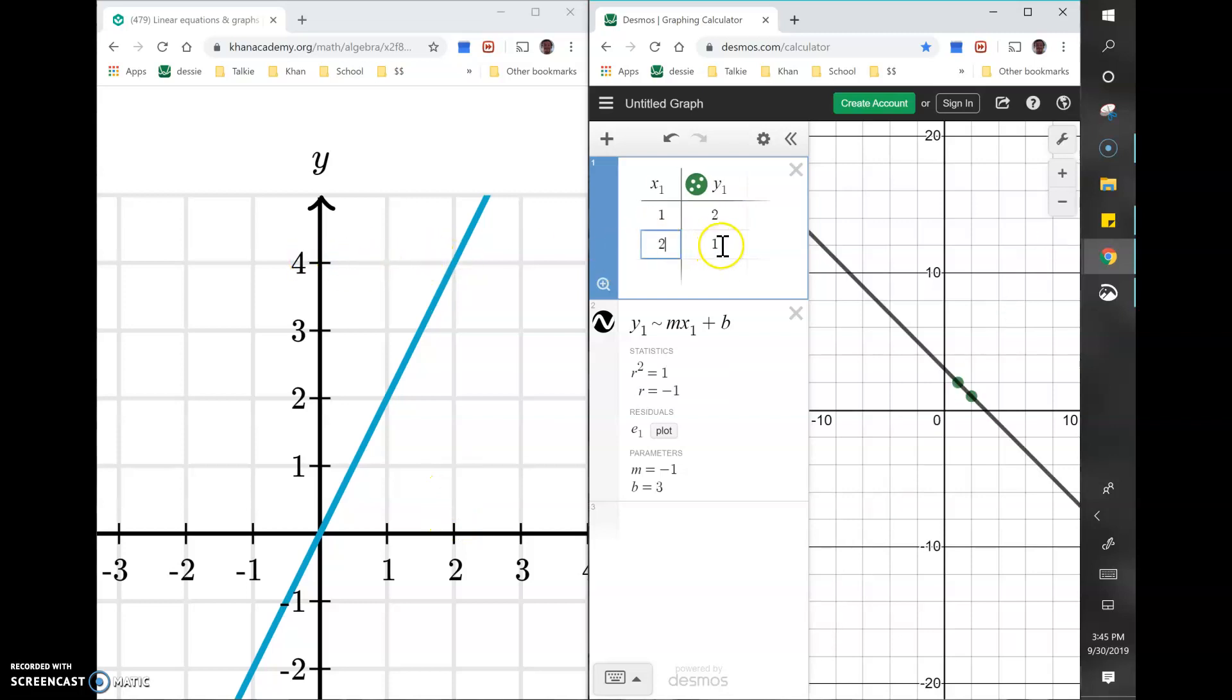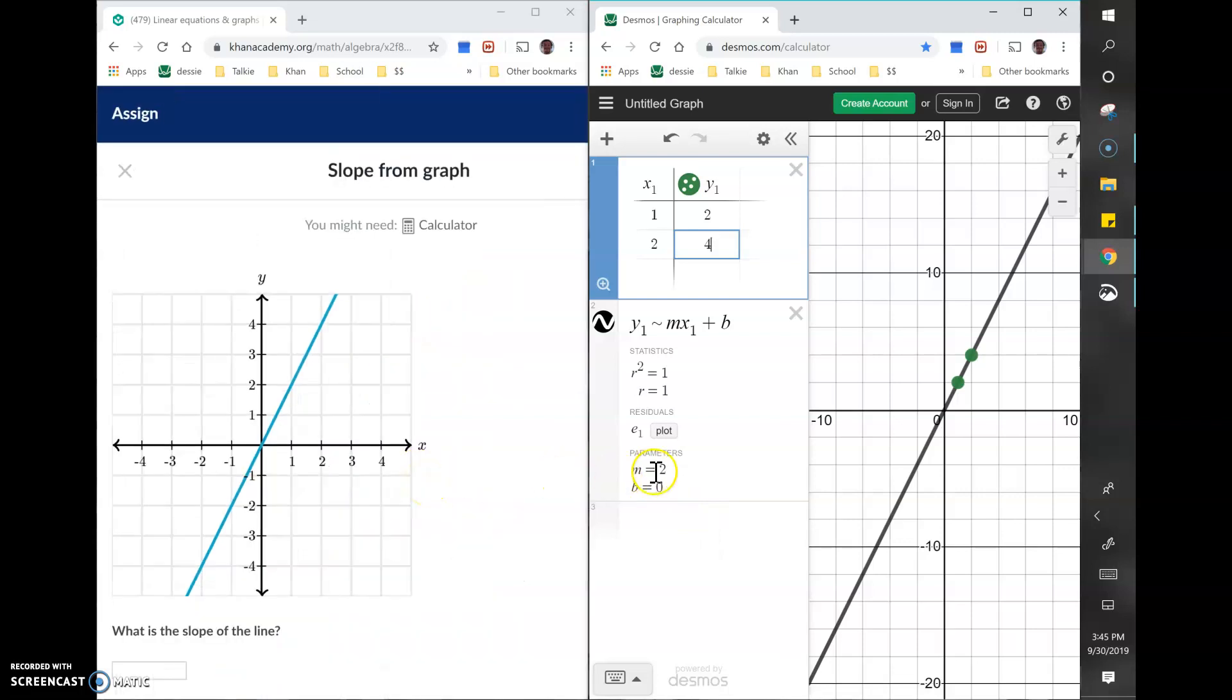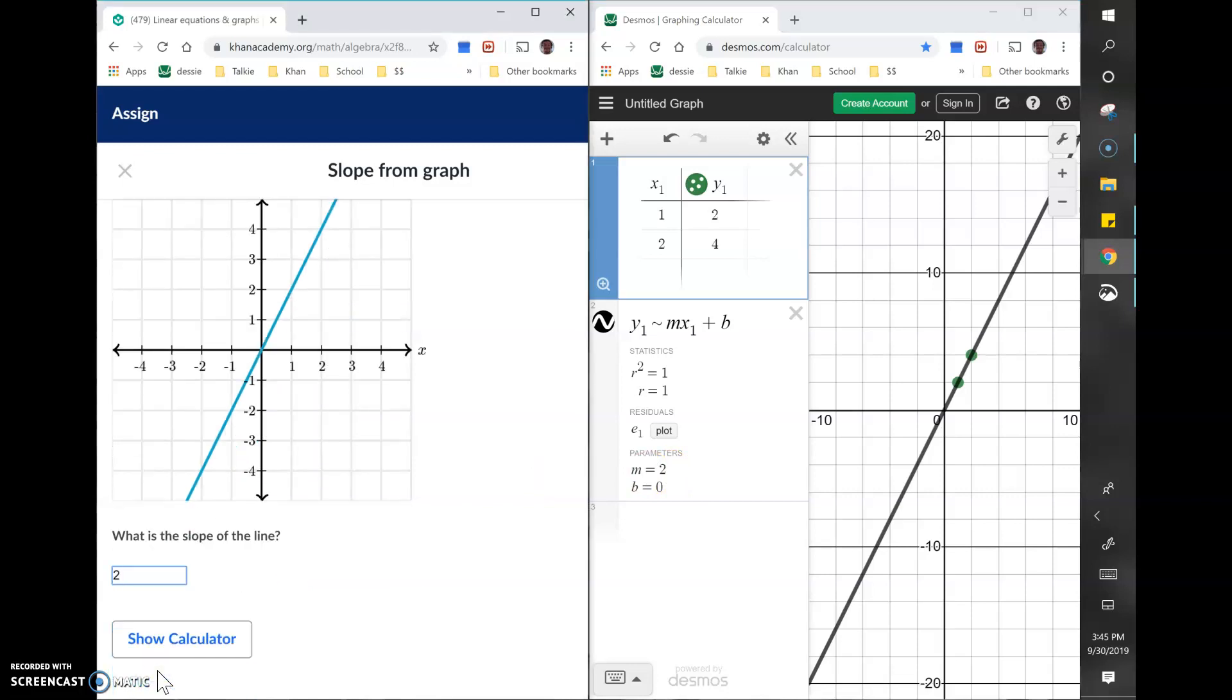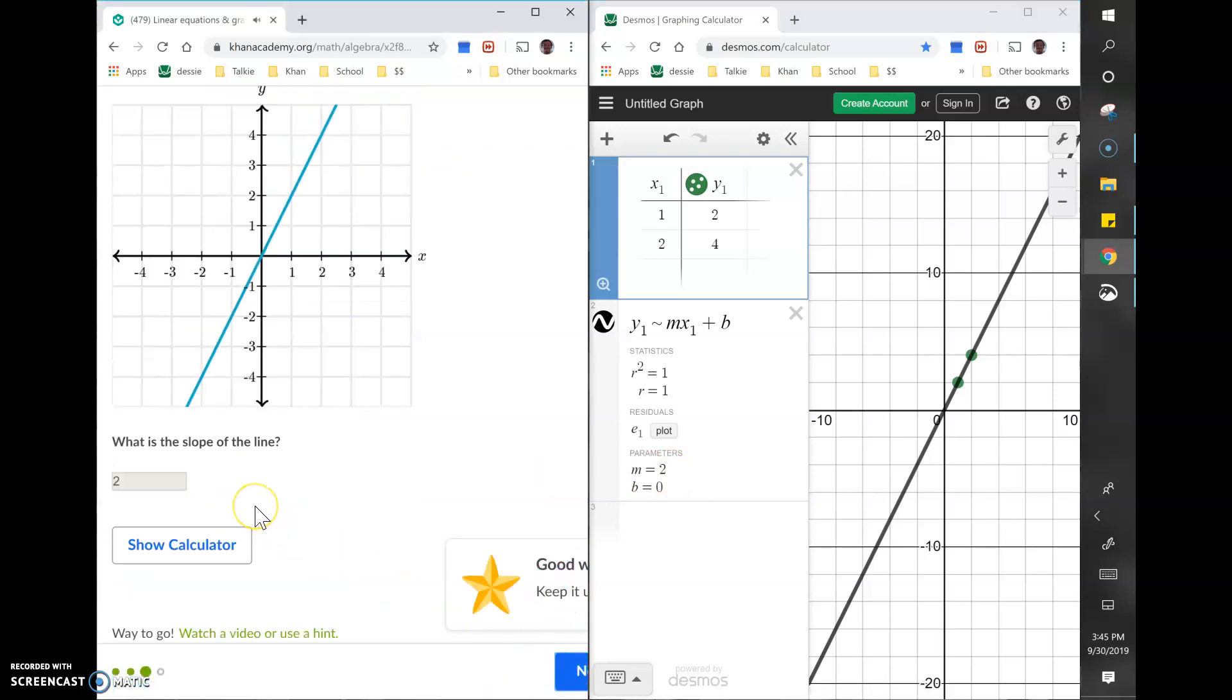So I'm going to replace x with 2 and y with 4. And you can see that this black line is now the same as this blue line, and the slope is 2. I'm getting that from Desmos where it says m equals 2. So I did one example by counting and one example by utilizing Desmos with the table and the equation. Good luck.